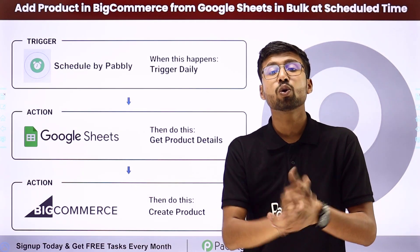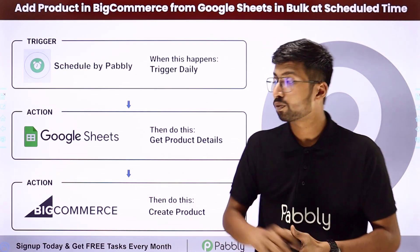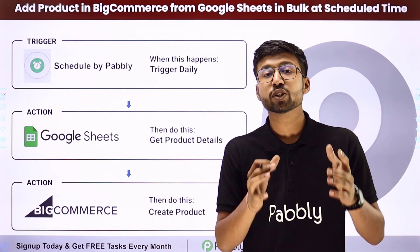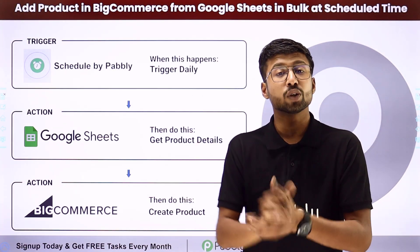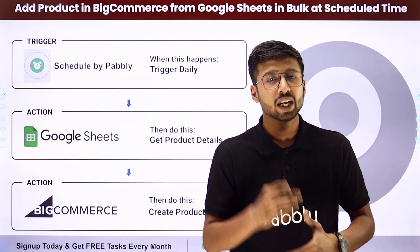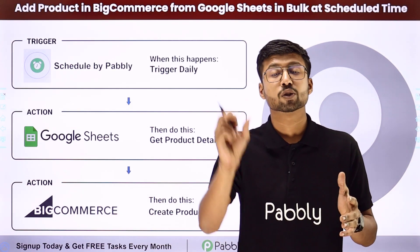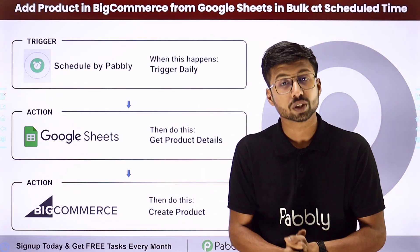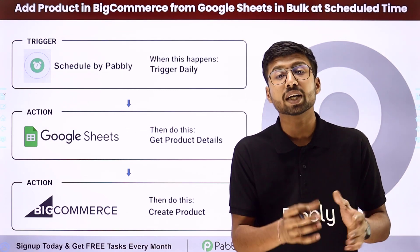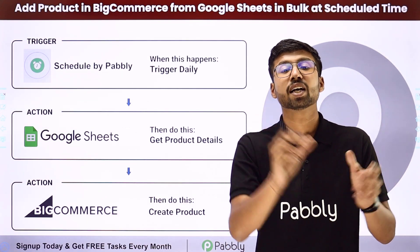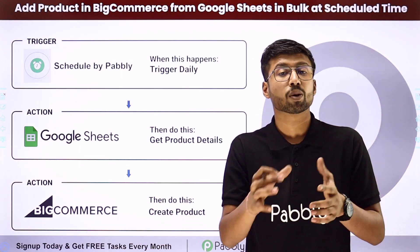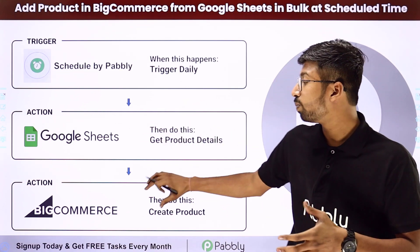Suppose you own an e-commerce store created using BigCommerce, and you are adding new product details into a Google Sheet, also updating the status of those products there. You want whatever products you are marking as 'ready' in your Google Sheet to be added into BigCommerce.